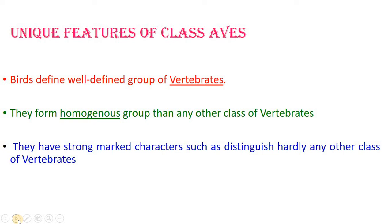Birds form a more homogeneous group than any other class of vertebrates — they don't share overlapping characters with mammals, reptiles, or amphibians. They have strongly marked characters such as bipedal locomotion — though they belong to Tetrapoda, they show bipedal locomotion — feathers, a boat-shaped body, and are adapted to the aerial mode of life.